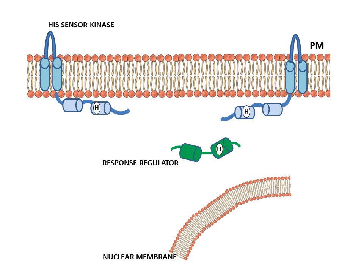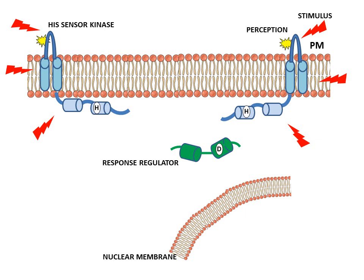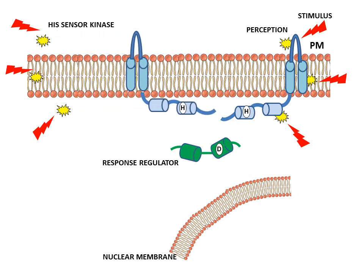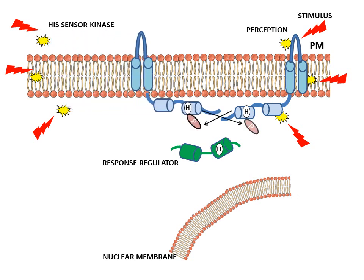These are generally histidine sensor kinases present in prokaryotic systems, with membrane-bound portions, a hydrophilic loop, and a hydrophilic C-terminal region. Whenever there is a change in environmental conditions, a stimulus is generated that can be perceived through the hydrophilic loop connecting the two membrane domains, by the hydrophobic domains themselves, or under some circumstances by the cytoplasmic hydrophilic C-terminal chains.